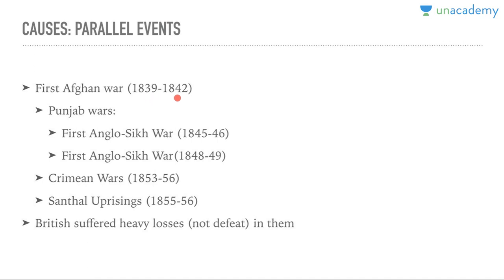There were parallel events going on: the First Afghan War — nobody has ever won in Afghanistan, no country has beaten them in their own backyard. In the Punjab wars (First and Second Anglo-Sikh Wars), the British won, but there were still massive losses. In the Crimean War between Russia and the allies — UK and France on one side, Russia on the other — there were massive losses. Similarly, in the Santhal uprisings, the British suffered heavy losses of resources, heavily affecting governance.